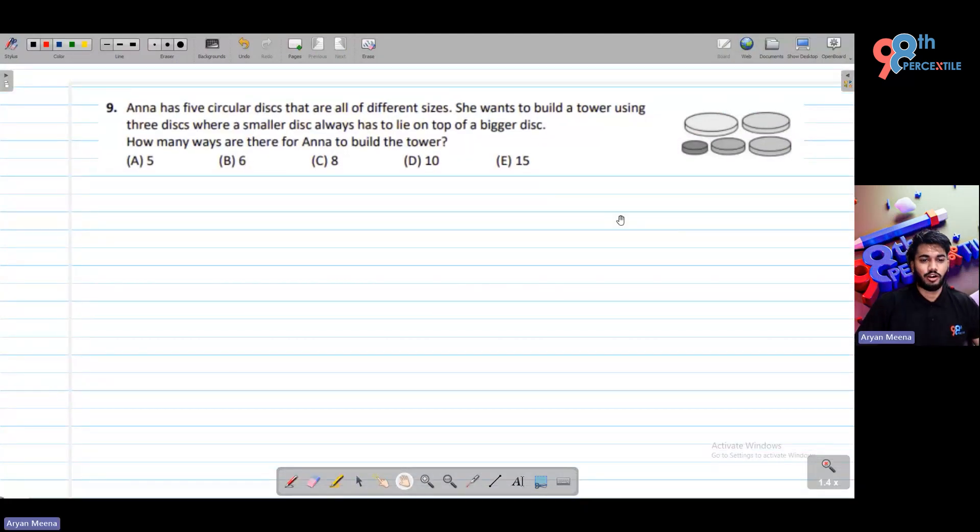Hey everyone, we will solve question number 9 of Kangaroo Math Test for 2023. Anna has five circular disks that are all of different sizes. She wants to build a tower using three disks where a smaller disk always has to lie on top of a bigger disk. How many ways are there for Anna to build the tower?